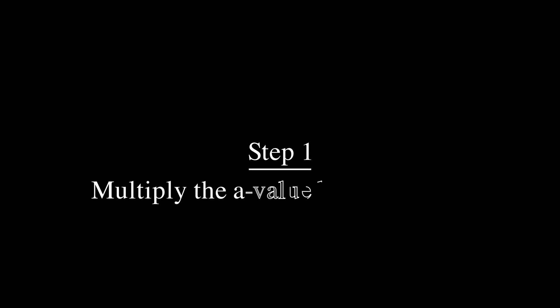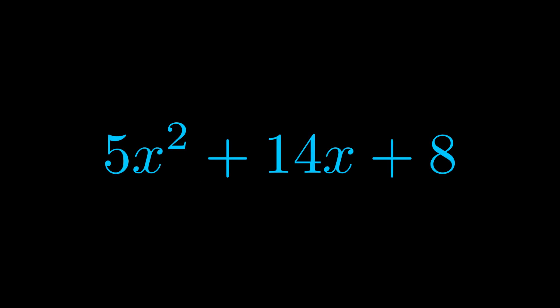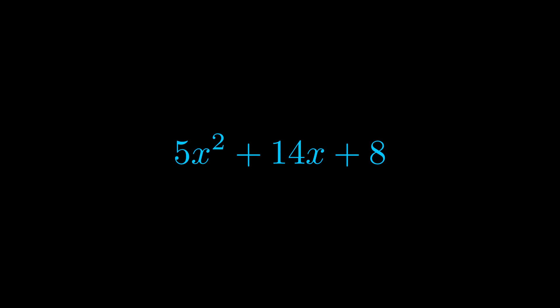Step one when factoring an equation of this form is to multiply the a value by the c value. Here we can see that our a value is the coefficient on the x squared term and our c value is the constant term.